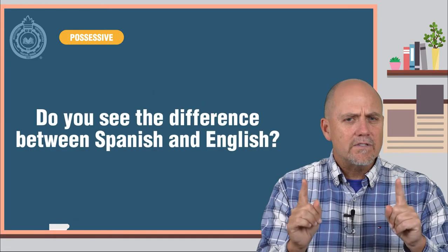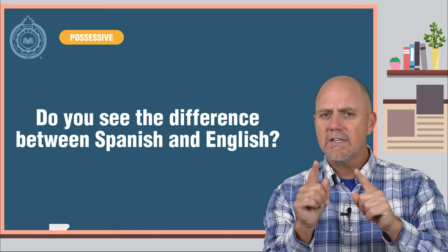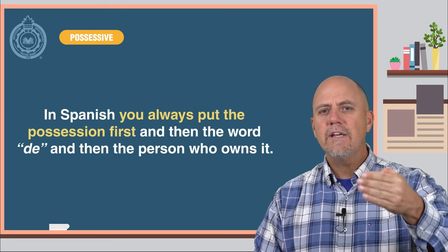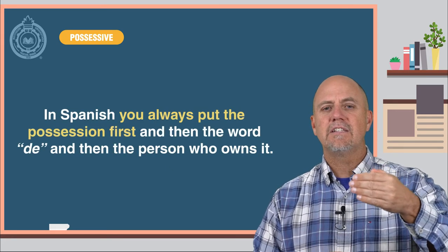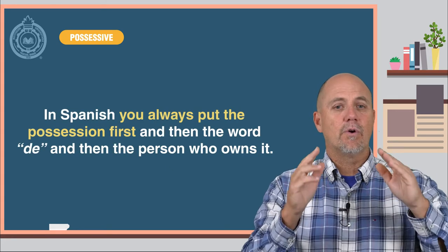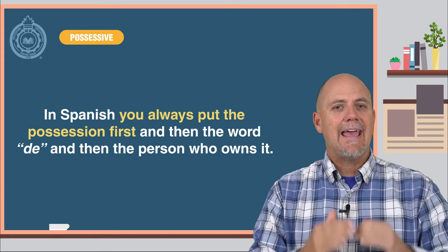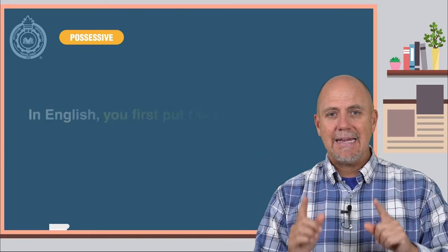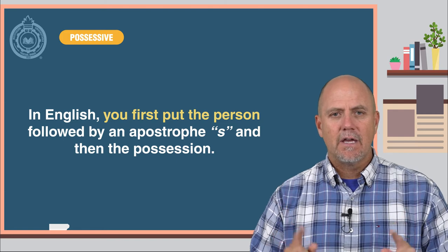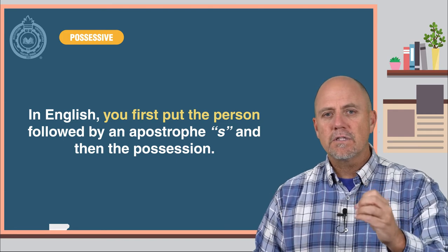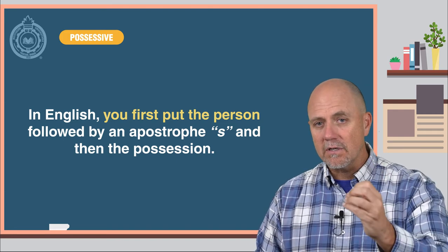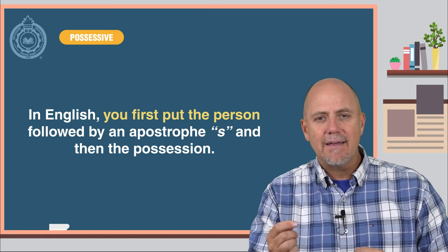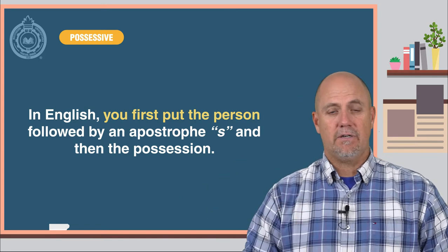Do you see the difference between Spanish and English? In Spanish, you always put the possession first, and then the word 'de', and then the person who owns it. In English, it is the opposite — you first put the person, followed by an apostrophe s, and then the thing or possession.